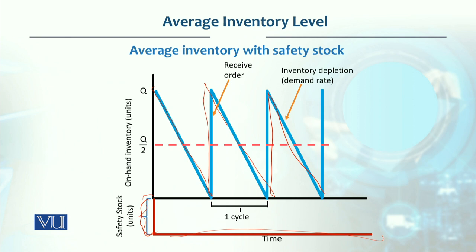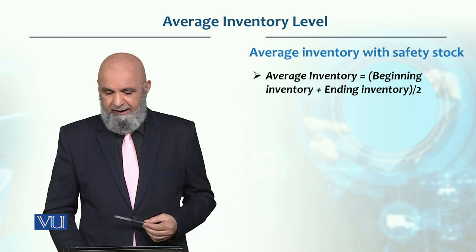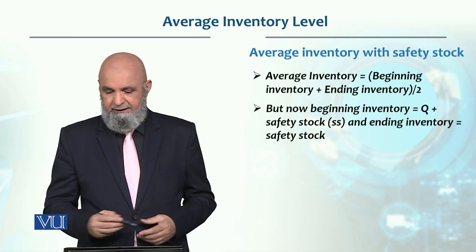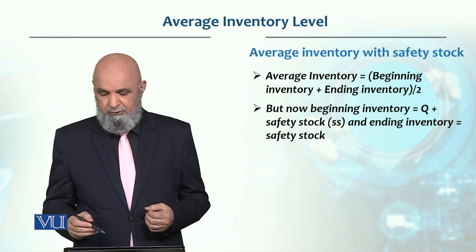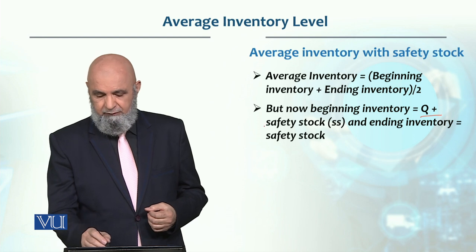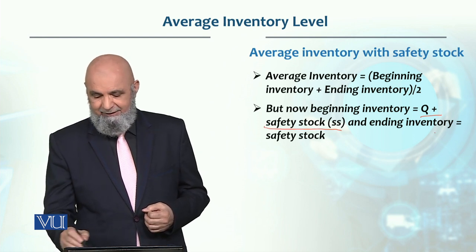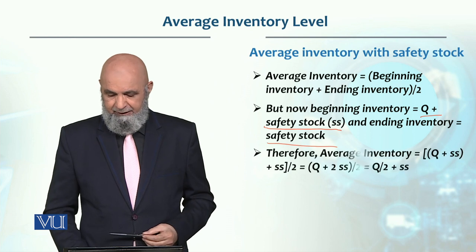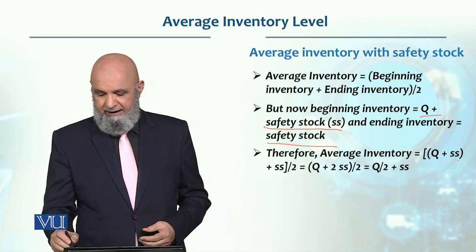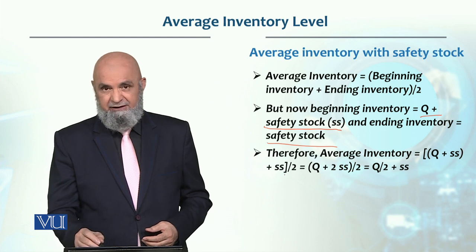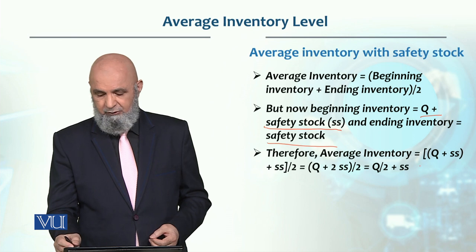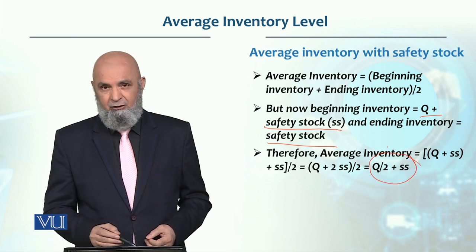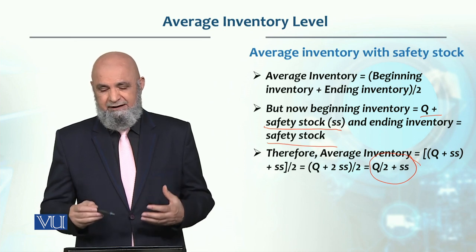So the safety stock will not be divided by 2. This will be added in your average inventory. What you have to do is: beginning inventory plus ending inventory divided by 2. So in this case, beginning inventory is Q plus safety stock, and ending inventory is just safety stock, because Q is 0. So Q plus safety stock plus safety stock divided by 2 gives you Q divided by 2 plus safety stock. So this is basically your average inventory.